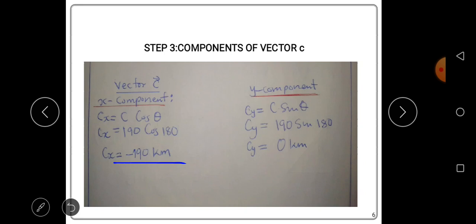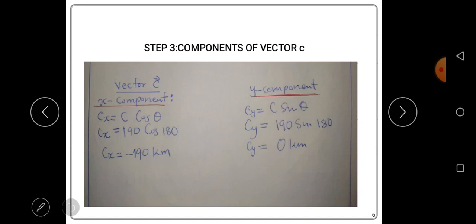The y-component of vector C is Cy = C sin θ = 190 sin 180. Punching 190 sin 180 into the calculator gives zero. The y-component of vector C is zero. We can confirm from the diagram that this vector has no y-component — the calculations have proven that vector C has no y-component.